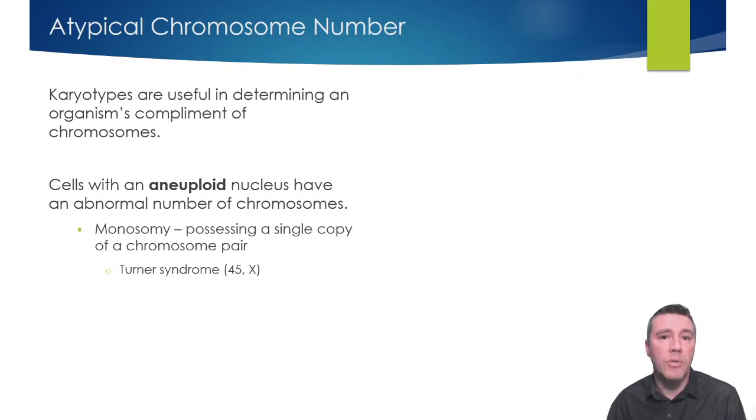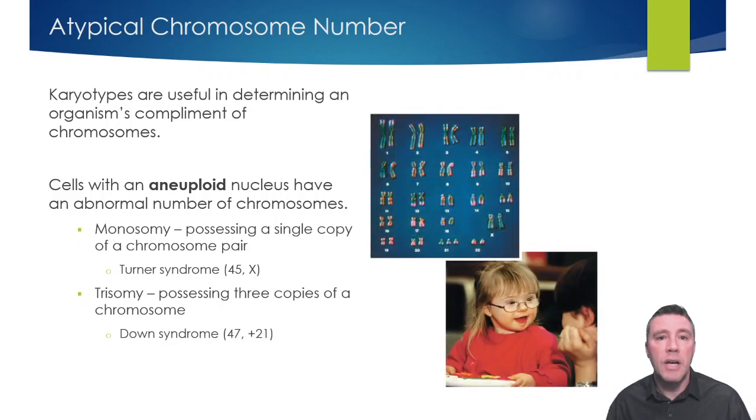Trisomy results when three copies of a chromosome are present. Also known as trisomy 21, Down syndrome is the most well-known example of such a condition. In this case, an individual has 47 chromosomes, since they have three copies of chromosome 21. Down syndrome is one of the most common chromosomal conditions, occurring in 1 in every 1,000 births.